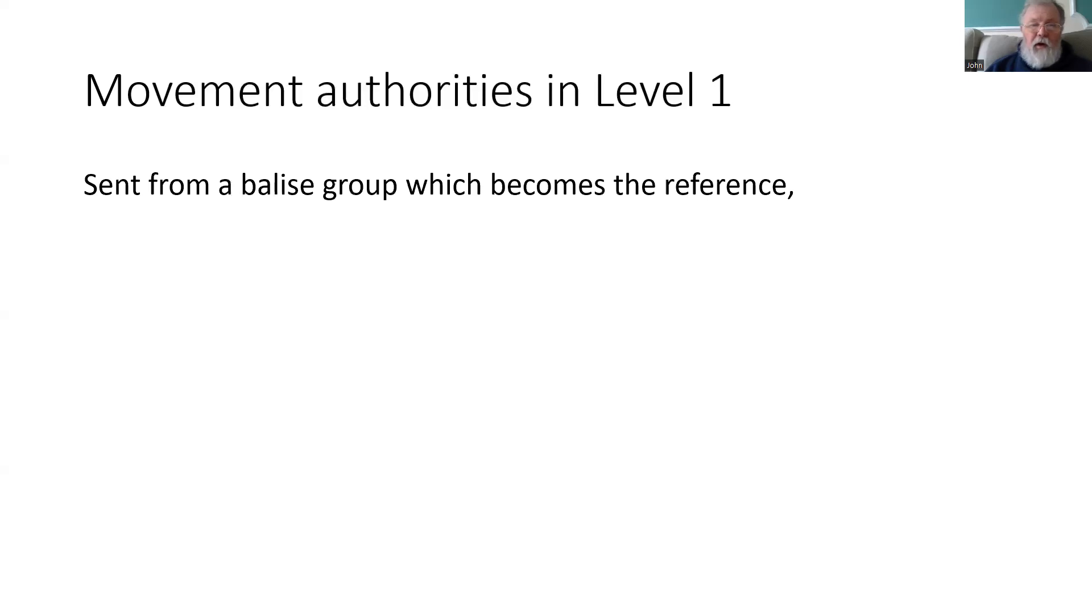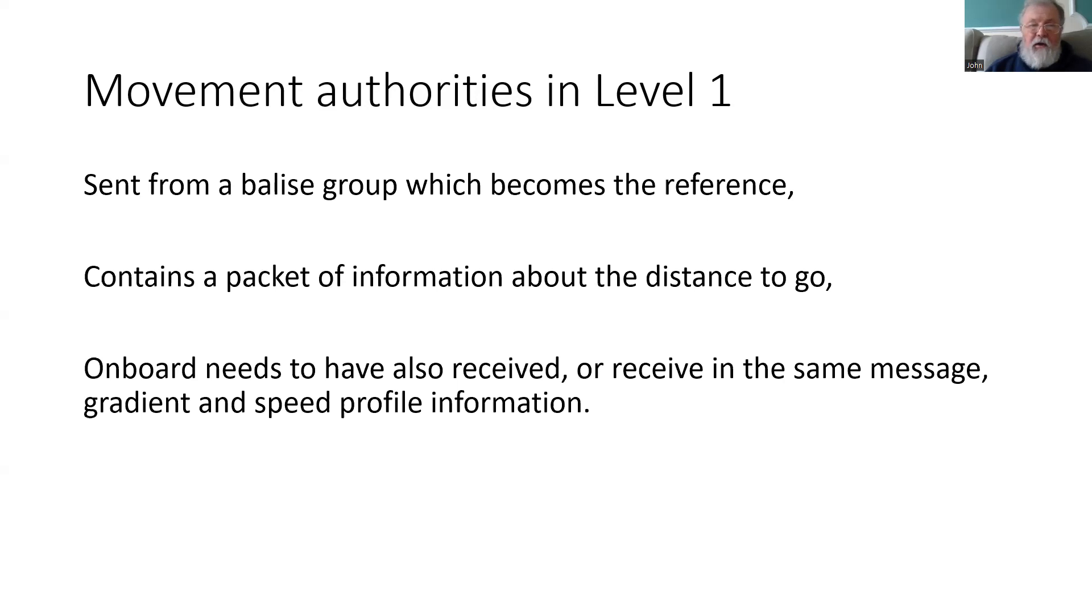So on Level 1, a movement authority is sent from a balise group, and that becomes the reference. It contains a packet of information about the distance to go—the actual movement authority—and the onboard also needs to have received other packets, often in the same message, related to the gradient and the speed profile.